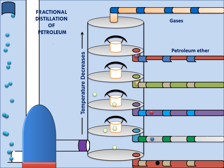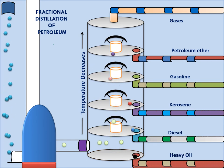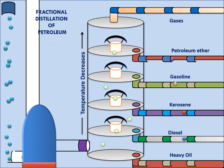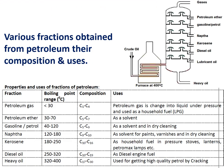The different fractions separated are: gases, petroleum ether, gasoline, kerosene, diesel, and avi oil. Avi oil is a high boiling point compound, so it condenses at the bottom of the tank. Gases have low boiling point compounds, so they are separated at the top of the tank. Higher boiling point fractions condense and are collected at the bottom of the tower; lower boiling point fractions are collected as gas at the top. This is the principle of fractional distillation — separation based on boiling points.